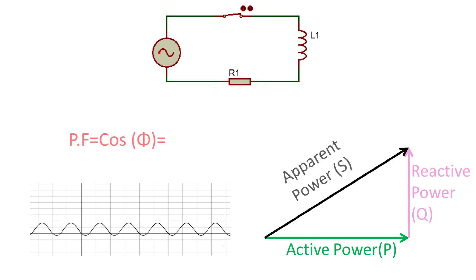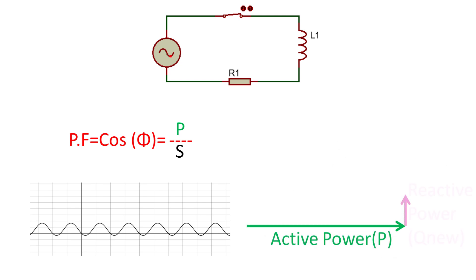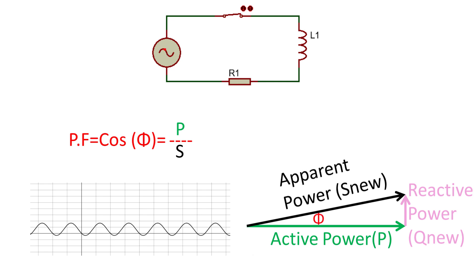Power factor is P over S, or cosine phi. This is important because it defines your system's efficiency. The closer your power factor is to one, the more efficiently you are using your electricity. When the power factor is near one, it means that most of the apparent power you are using is active power.